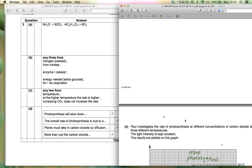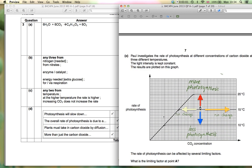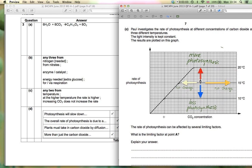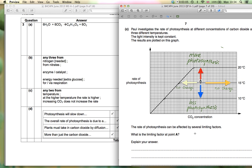Paul's investigating the rate of photosynthesis and changing different variables. It tells you at the beginning that light intensity is kept constant so you cannot use light as your answer for part C. It says the rate of photosynthesis can be affected by several limiting factors. What is the limiting factor at point A?